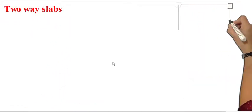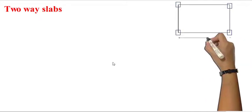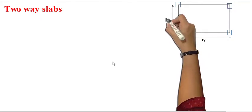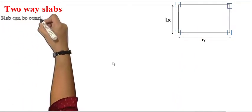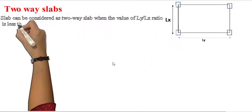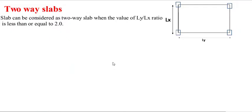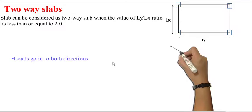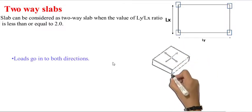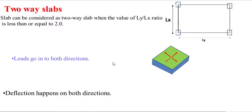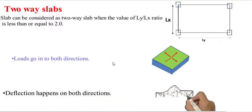Two-way slabs: again, let us consider a slab supported on its four edges. If ly is the longer direction and lx is the shorter direction, a slab can be considered a two-way slab when the value of the ly/lx ratio is less than or equal to two. In a two-way slab, loads go in both directions — the longer and the shorter direction — and deflection happens in both the shorter and longer directions.